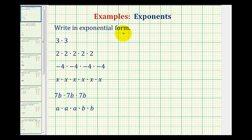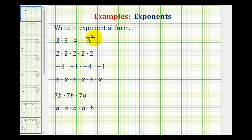We're going to write each product in exponential form. In exponential form, we have a base and an exponent. So for three times three, the factor is three, so the base is three. And because we have two factors of three, our exponent is two. We can say three to the second power, or three squared.